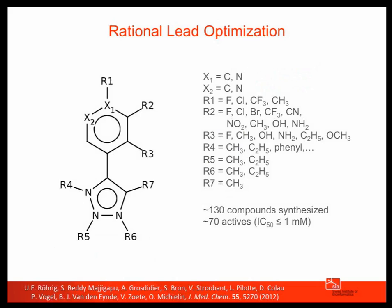In the next step, we try to optimize these molecules using our docking strategies. For this specific scaffold, Sumi has synthesized about 130 compounds for us. Roughly half of them were active, at least in the micromolar range. This might not sound great, but if you compare it to our brute force approach — collaborators in Belgium bought everything with the scaffold that was commercially available, got 200 triazoles, and found only two to be active — it is quite a good way to design new compounds.